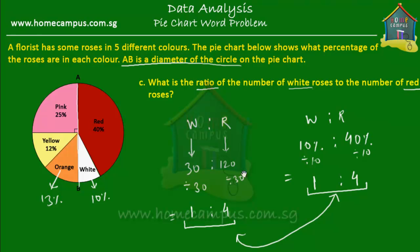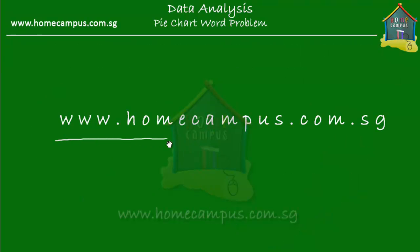So it doesn't matter whether you use the number of roses or the percentage of roses — you still get the same answer, because the number of roses are actually related to the percentage of roses. If all you really want to find is the ratio, it's really one and the same. That's the end of the lesson. I hope you understood what I taught. Go back and practice some questions and take a few tests at www.homecampus.com.sg. This is Em signing off for now. Bye-bye.